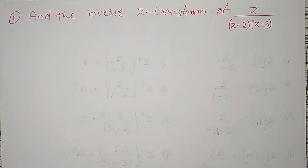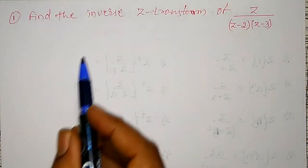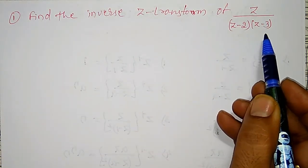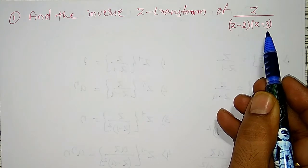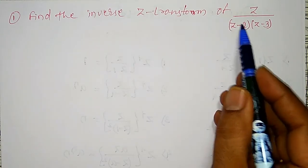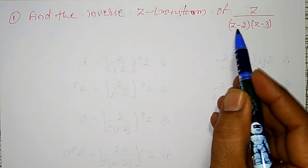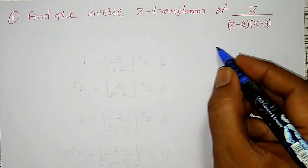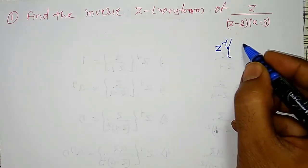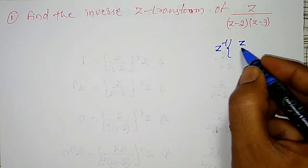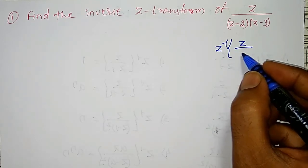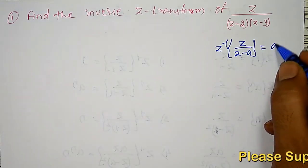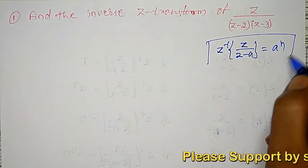In this video, I am finding the inverse z-transform of z divided by z minus 2 into z minus 3. As you observe, the denominator has linear factors z minus 2 and z minus 3. I am using the formula: inverse z-transform of z divided by z minus a is given by a raised to the power n. This formula I am going to use.